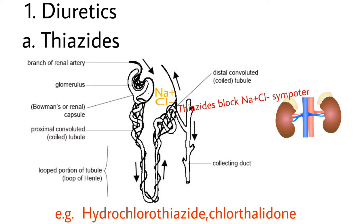Number 1 is Diuretics. These drugs act on the kidney to reduce blood pressure by increased urination. This drug is also subdivided into 3 types.